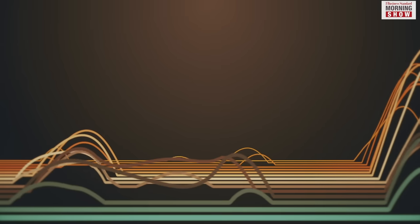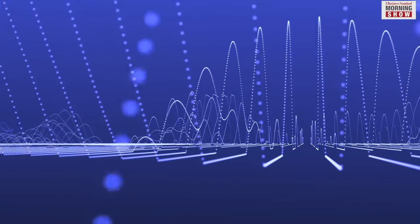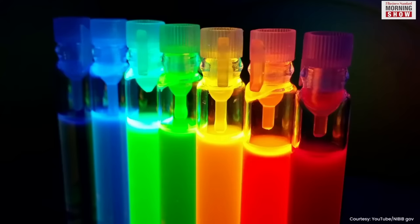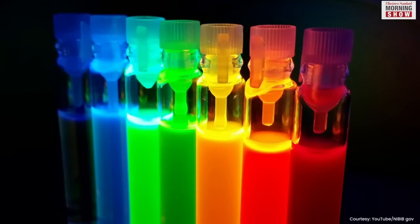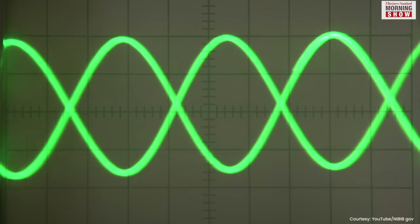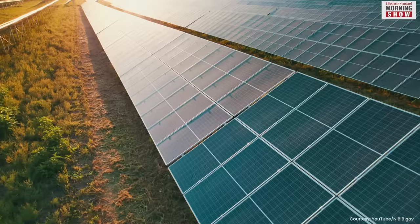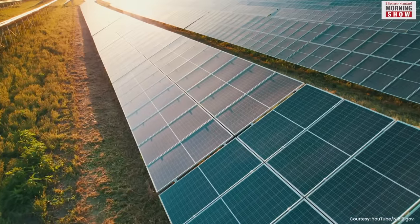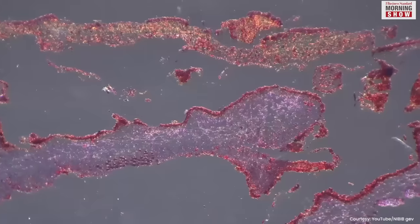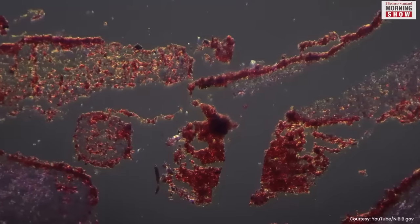Quantum dots can absorb a broad range of wavelengths of light and emit light at a narrow range of wavelengths. This feature is known as a high absorption coefficient and narrow emission band. It is essential for applications like solar cells and fluorescent labeling in biological imaging.